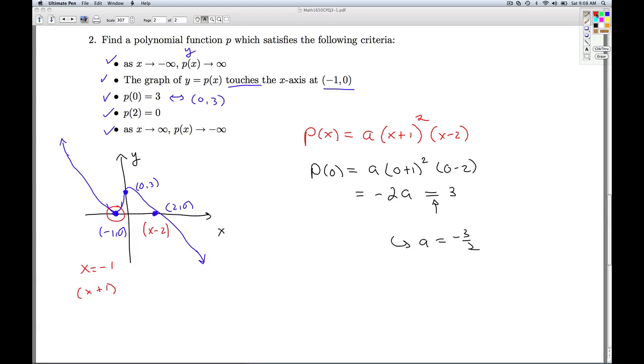So at this point now, I've got my polynomial function to be negative 3 halves x plus 1 quantity squared x minus 2.